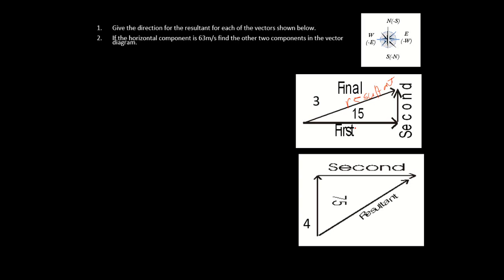It says the horizontal is 63 and we need to find the other two. X is the angle. Let's take a look — we're going to do number three and four on your sheet; we're not dealing with one or two.